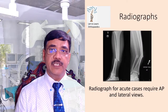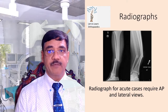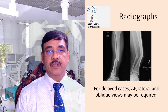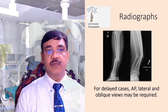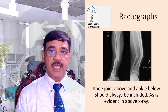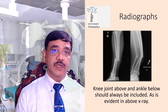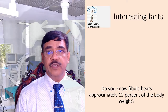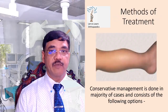Radiographs for acute cases require only AP and lateral view. For delayed cases, AP view, lateral view, and oblique may be required. The knee joint above and ankle below should be included in the x-ray. The fibula bears approximately 12% of the body weight — an important fact to remember.